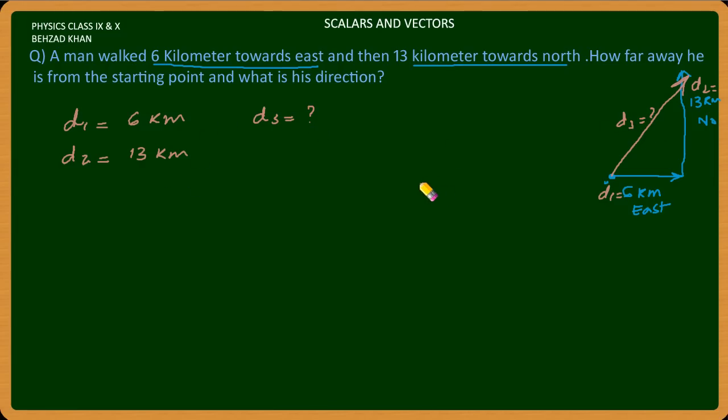So the Pythagorean theorem says that hypotenuse square equals base square plus perpendicular square. This is hypotenuse, this is the base and this is perpendicular. Now you have to know the hypotenuse.